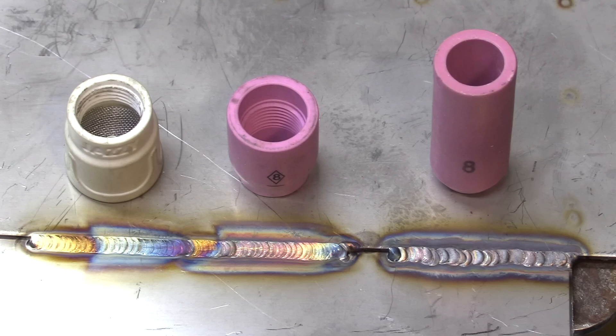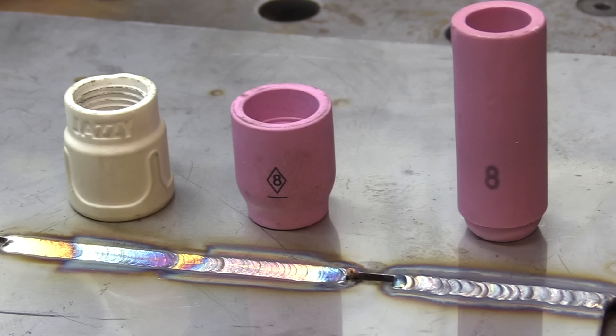And that's why I almost always use a stubby gas lens setup with either an 8 cup or something larger like a Furic ceramic cup instead of the standard ones. Here's a little piece to help you know what style torch you have so you get the right stuff.